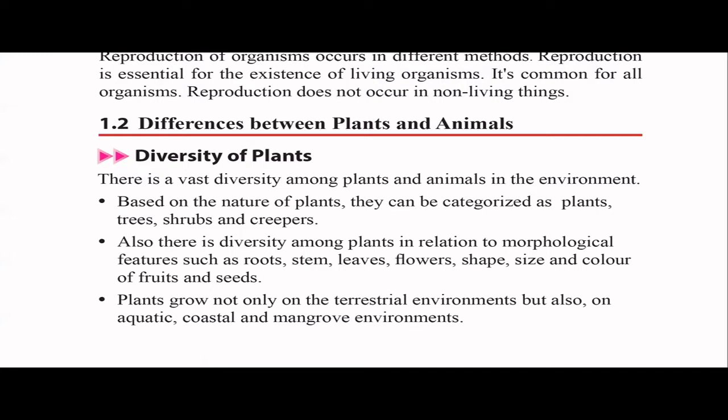In the previous video, we discussed that both plants and animals show five common characteristics, but there are definitely differences among animals and among plants. When it comes to the diversity of plants, if you look at your environment, you can see various types. We can differentiate them based on the nature of the plant, physical structure like morphological features, or based on habitat or environment.